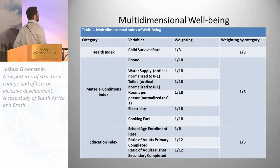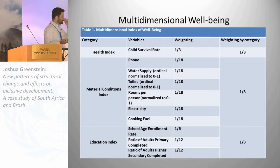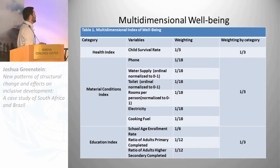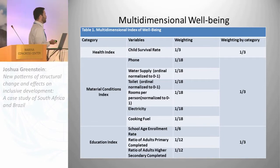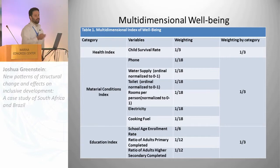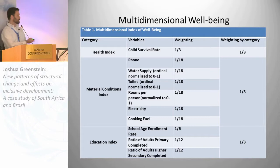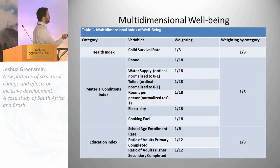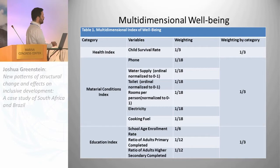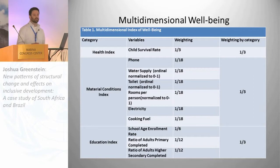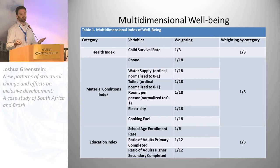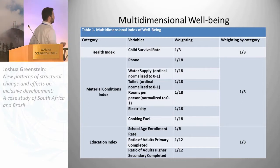This is the indicator I'm using — something very similar to a multidimensional poverty index. The differences are based on data availability, and I've used this to create a positive indicator rather than a negative one. Different components — child survival rate, school enrollment, electricity, access to clean water, et cetera — are calculated for each household and combined to make a household-level indicator on a scale of 0 to 100. This is what I'm using to measure well-being.